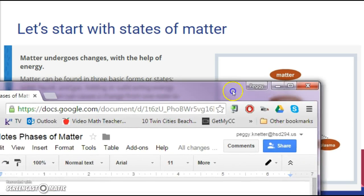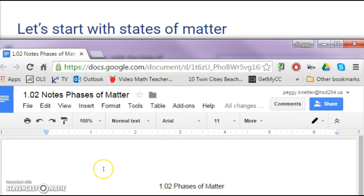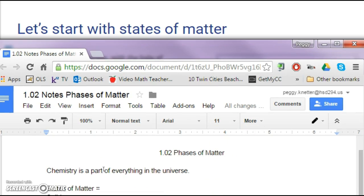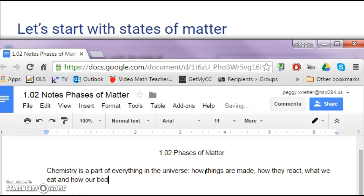So for our notes, get out your notebook or your files, whatever you're going to do. And this is my phases of matter. And what I put down here is chemistry is part of everything in the universe. Okay, and that was the main idea of the first three slides, that everything around you has to do with chemistry, how things are made. So let's add a few things. How things are made, how they react, all that type of stuff. What we eat and how our bodies function, etc. So, I mean, I could list literally millions of things, but that's at least a good start for our notes.